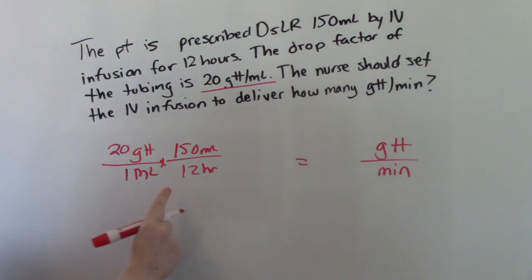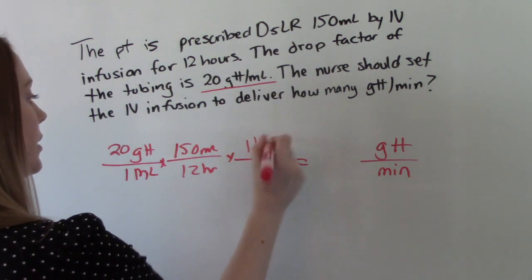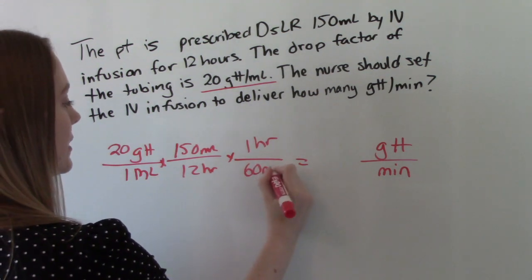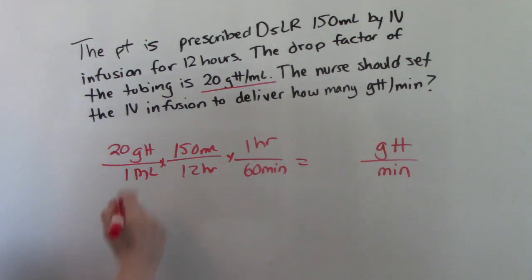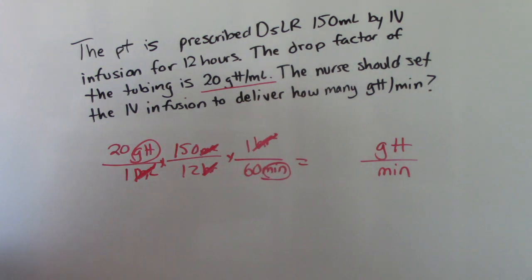And we need to convert those hours to minutes. So 1 hour is 60 minutes. So we'll just cancel out our ml's, cancel out our hours. That leaves us with drops over minutes, which is exactly what we want.